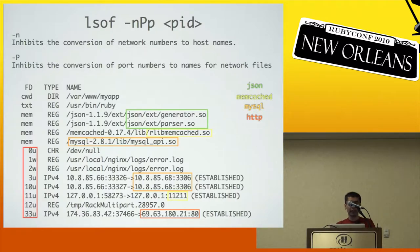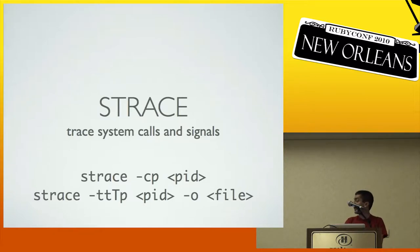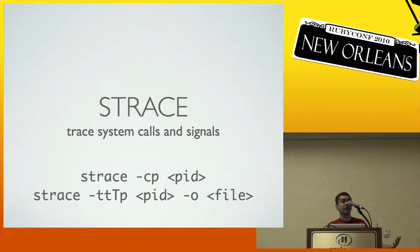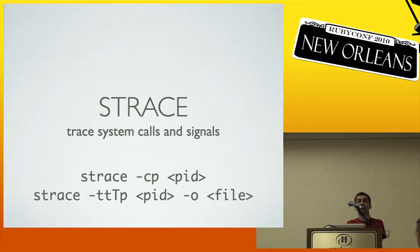So the next tool is S-Trace. It's Linux only, doesn't work on OS X, but similar to LSOv, it can connect to a running process. The cool thing about these tools is they're not Ruby-specific — you can run them on any process and get a bunch of information about that process.